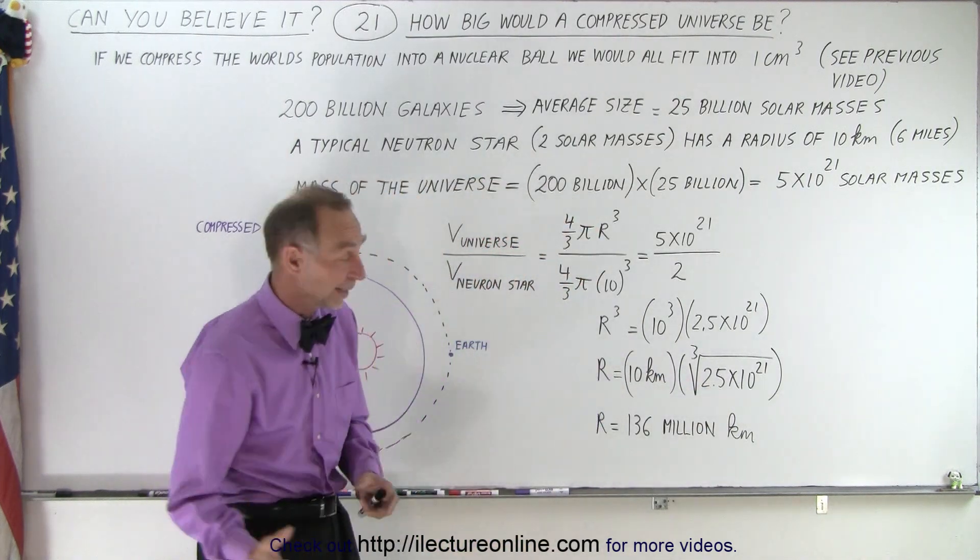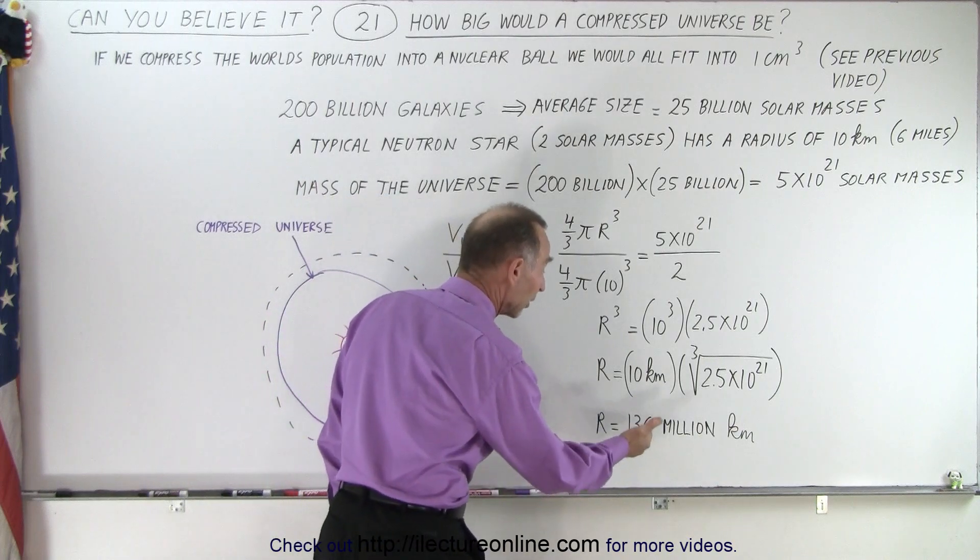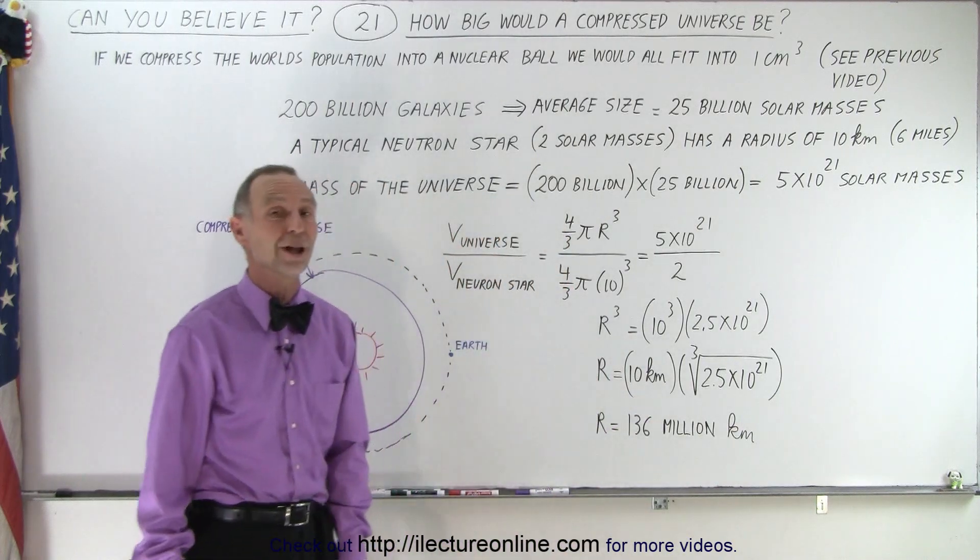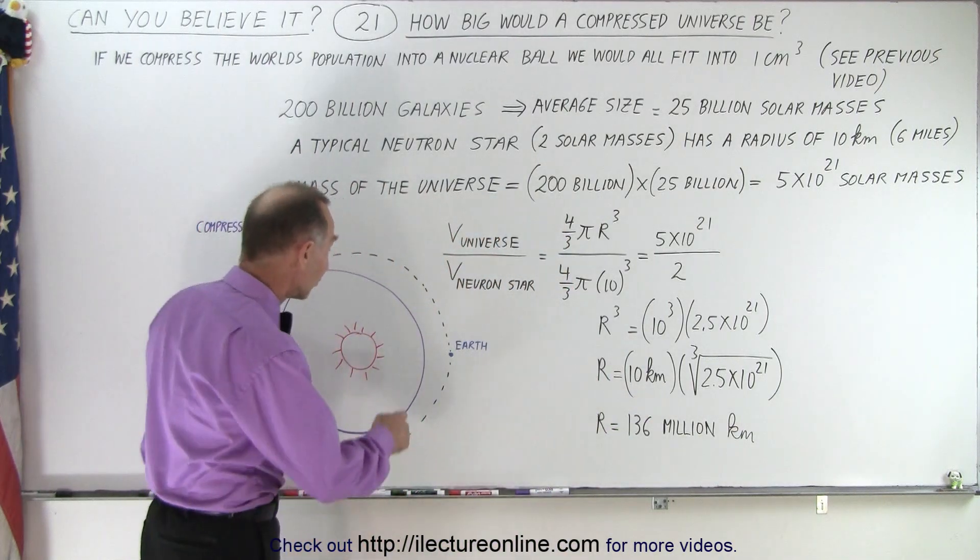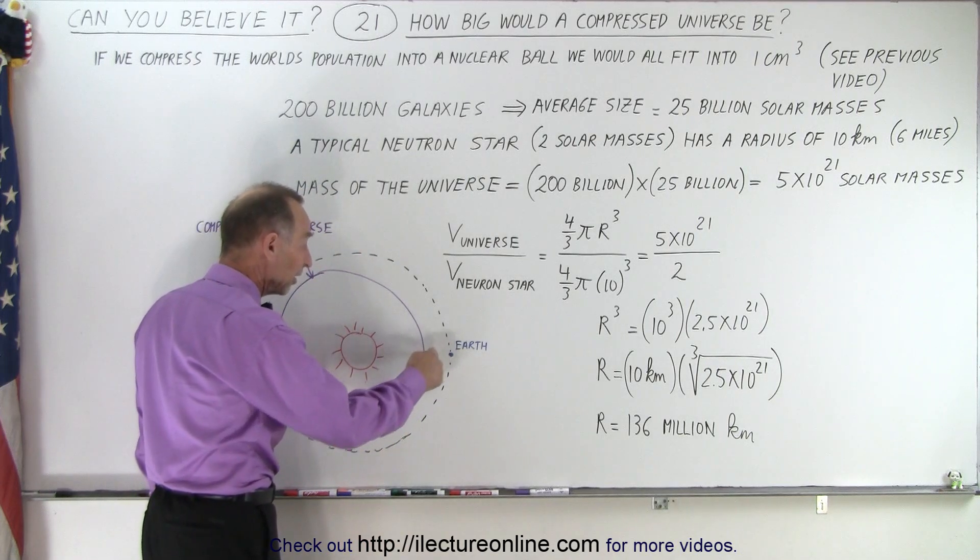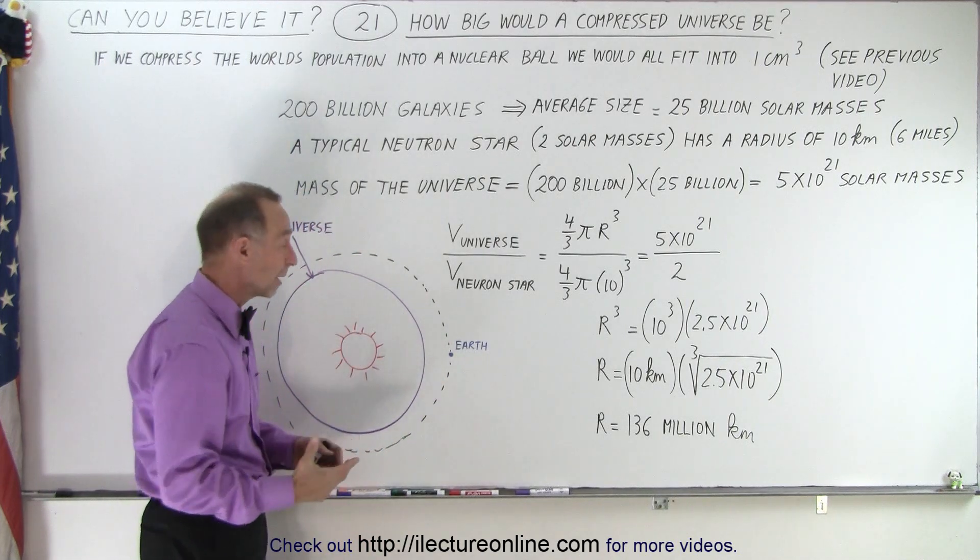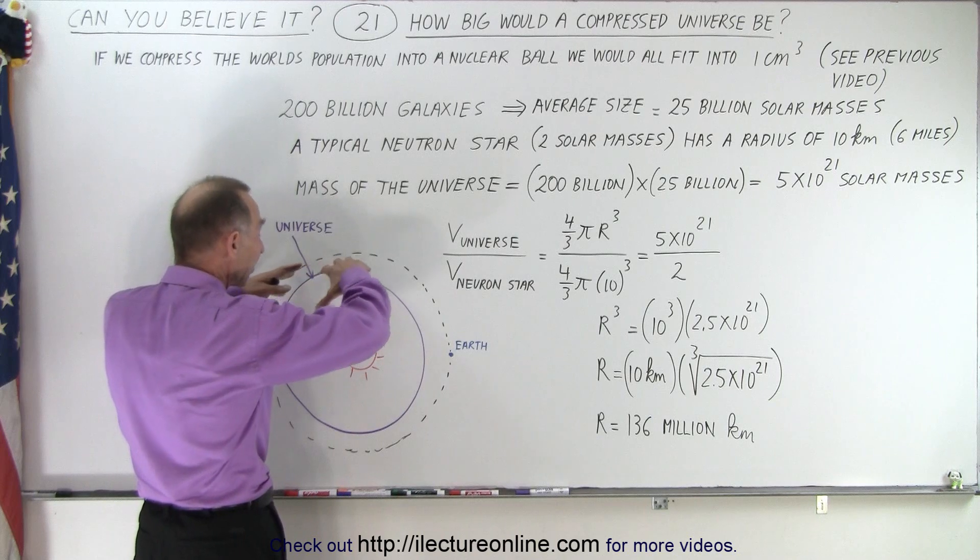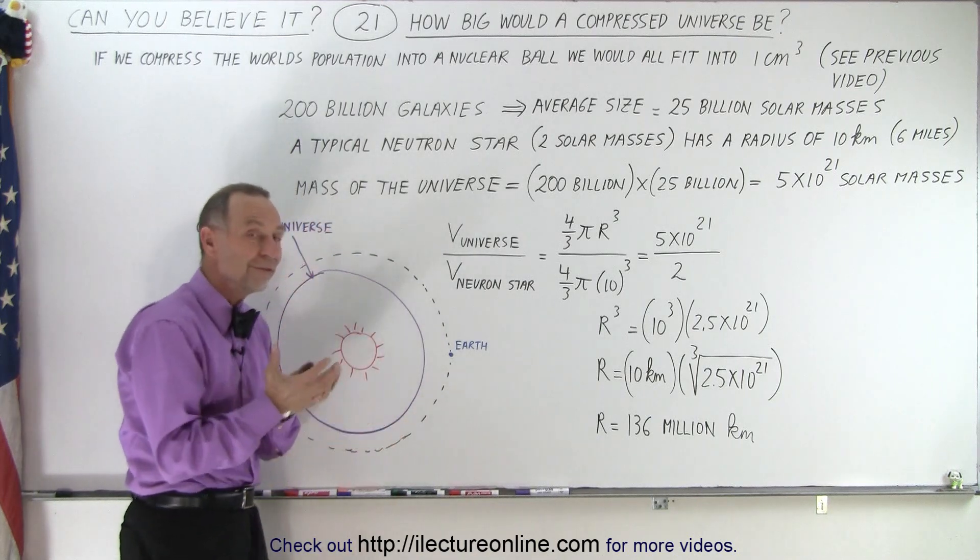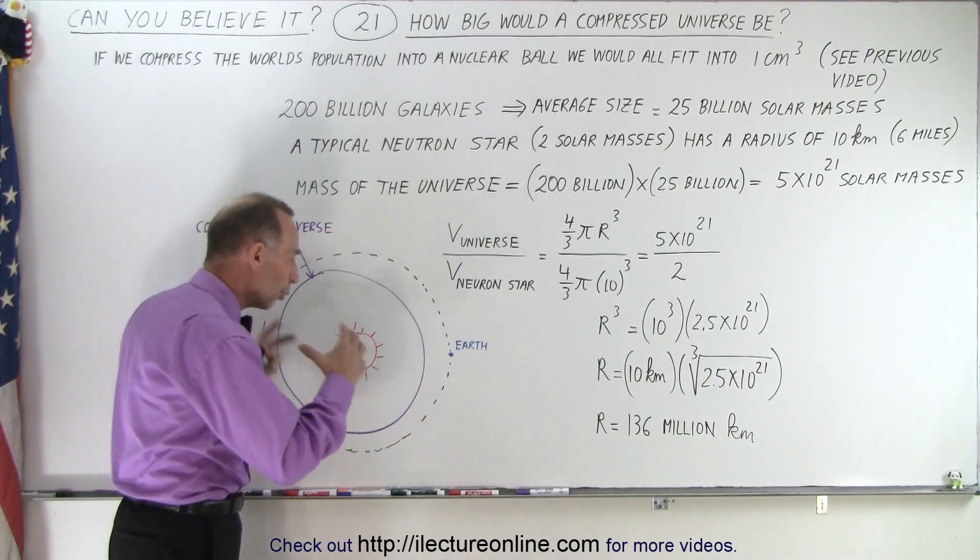When I calculated it, it came out to be 136 million kilometers. The earth's distance from the sun is about 150 million kilometers, which means that the entire compressed universe would fit inside the orbit of the earth.